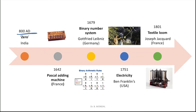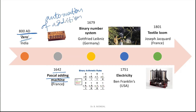Now let's come to the history of computers. We start from India — around 800 AD, zero was invented in India, and zero has a huge contribution to computer science because computers understand on/off, zero and one. Then in 1642 Pascal's adding machine came — an automation of addition, and it was a mechanical device.